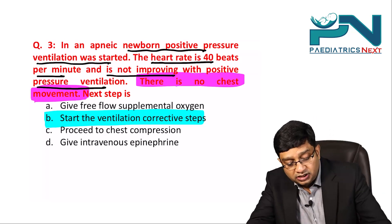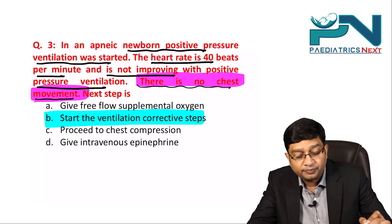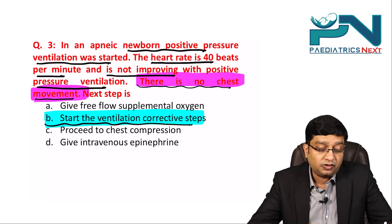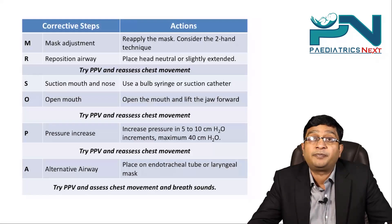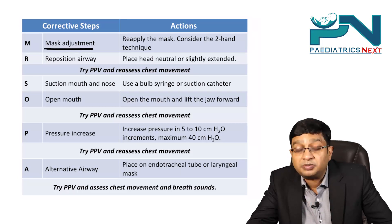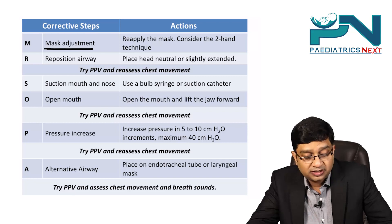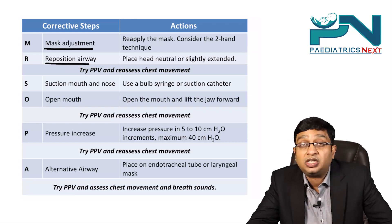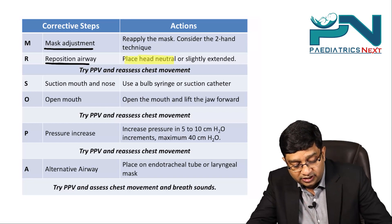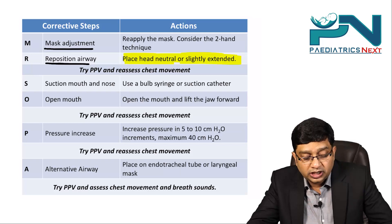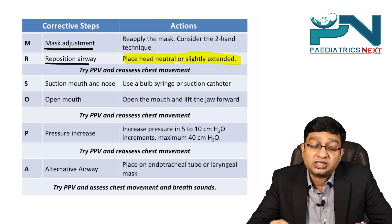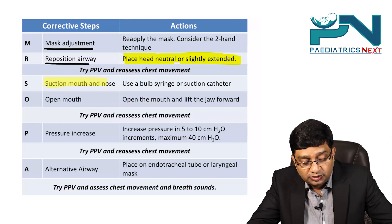When there is no chest movement, you should start the ventilation corrective steps, remembered by the mnemonic MR SOPA. M stands for mask adjustment — adjust the mask. R stands for reposition of the airway, with the head in neutral or slightly extended position. Then reattempt PPV and reassess chest movement. If still no chest movement, perform suction of the mouth and nose.